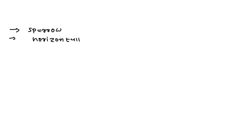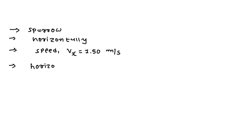We are given a white-crowned sparrow flying horizontally with speed vx equal to 1.50 meters per second. Its wings begin to drop in free fall, and we want to find how far the sparrow falls after traveling a horizontal distance h equal to 0.600 meters.